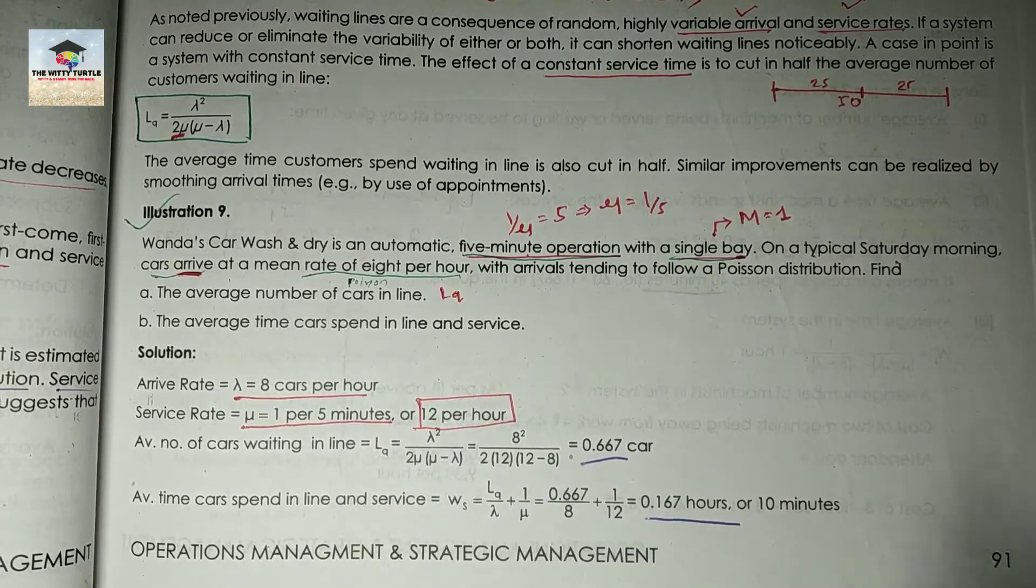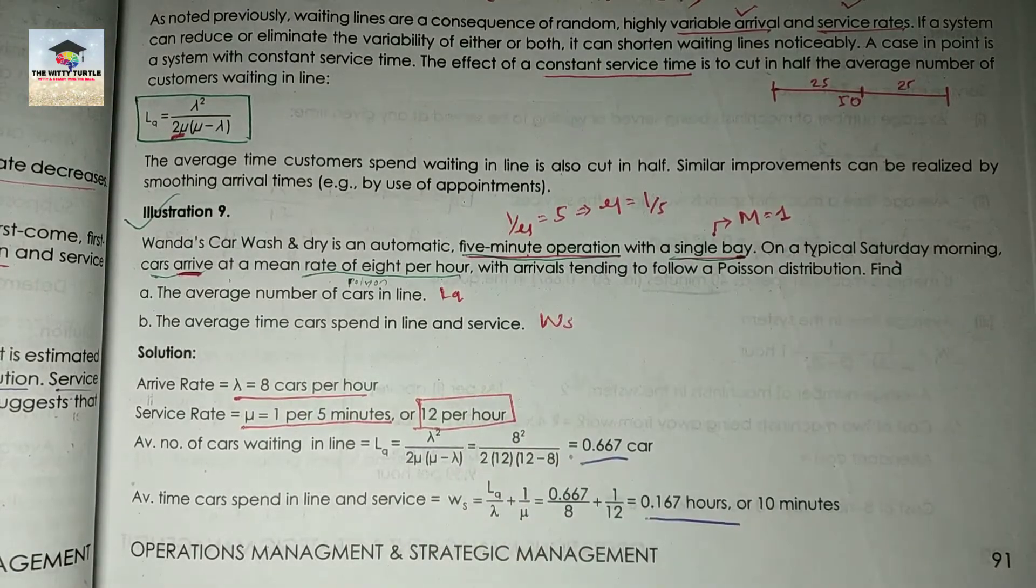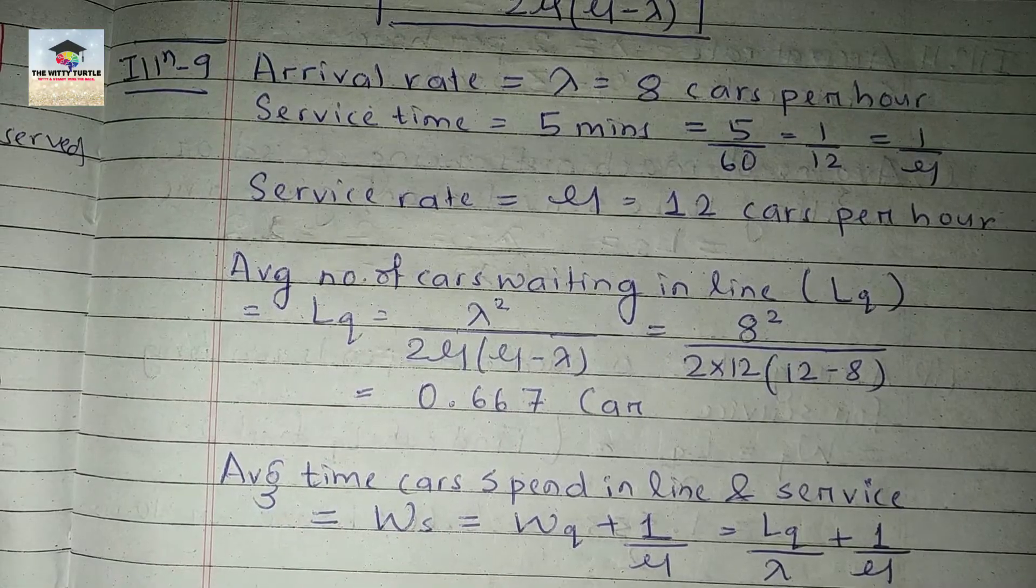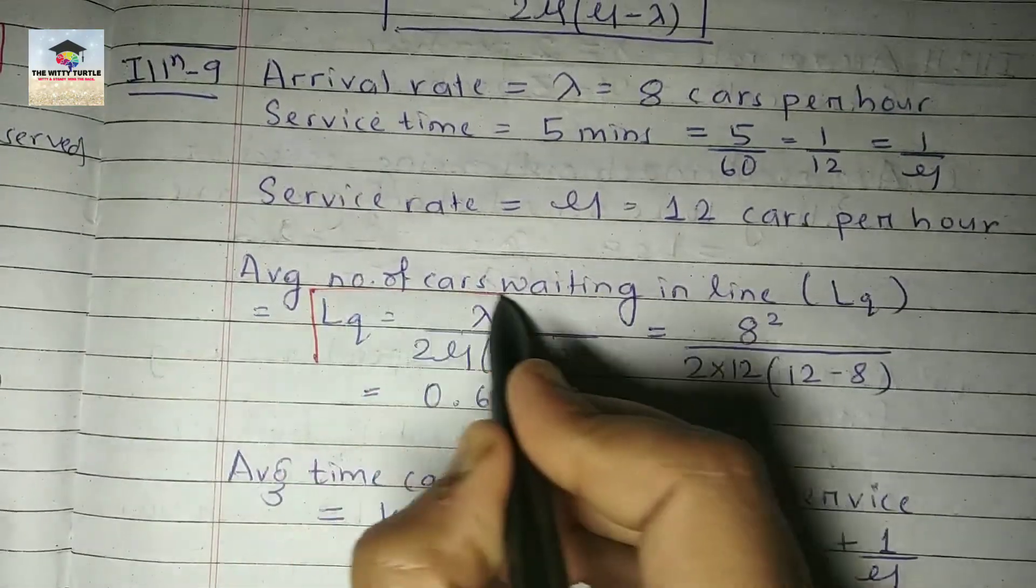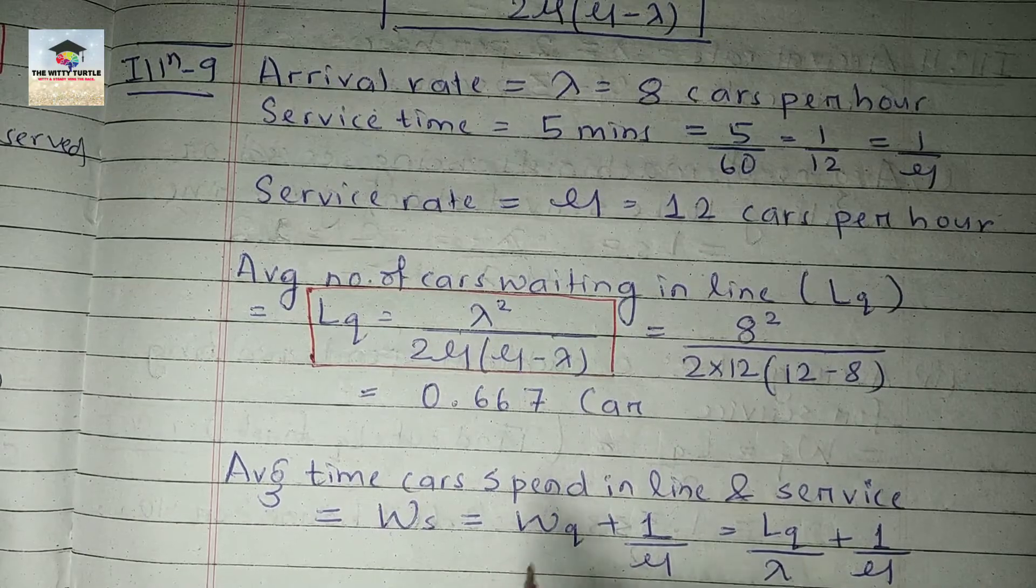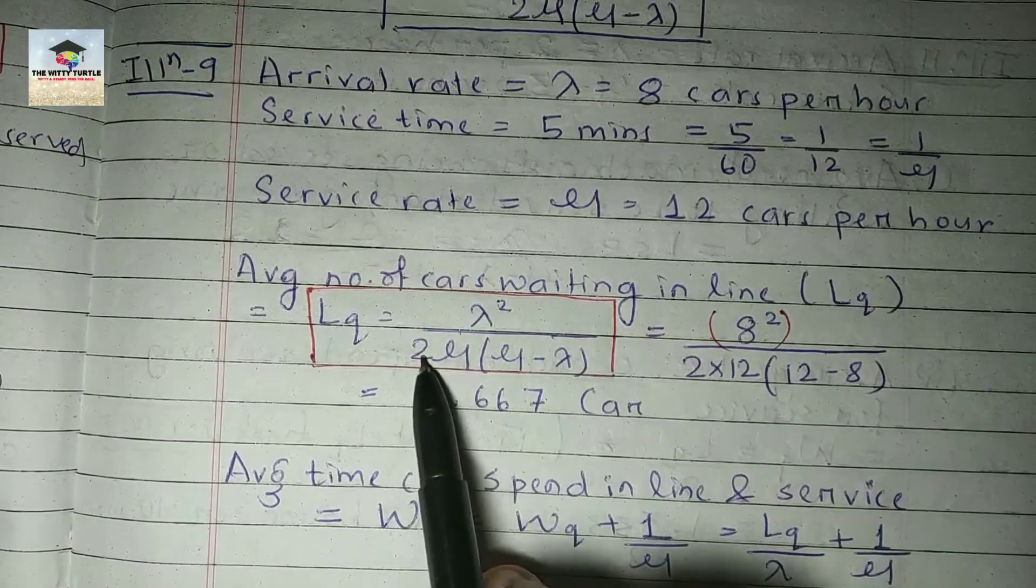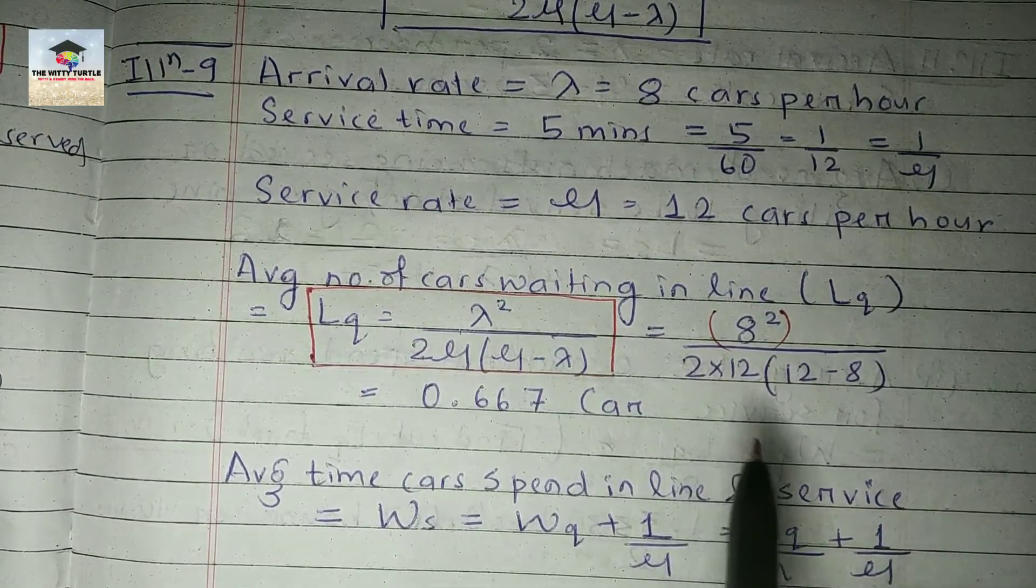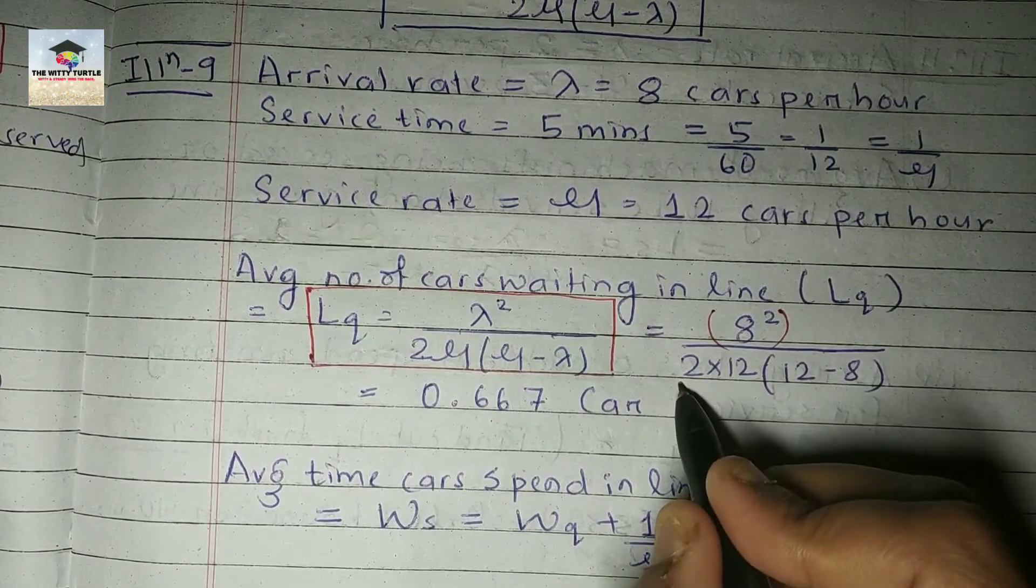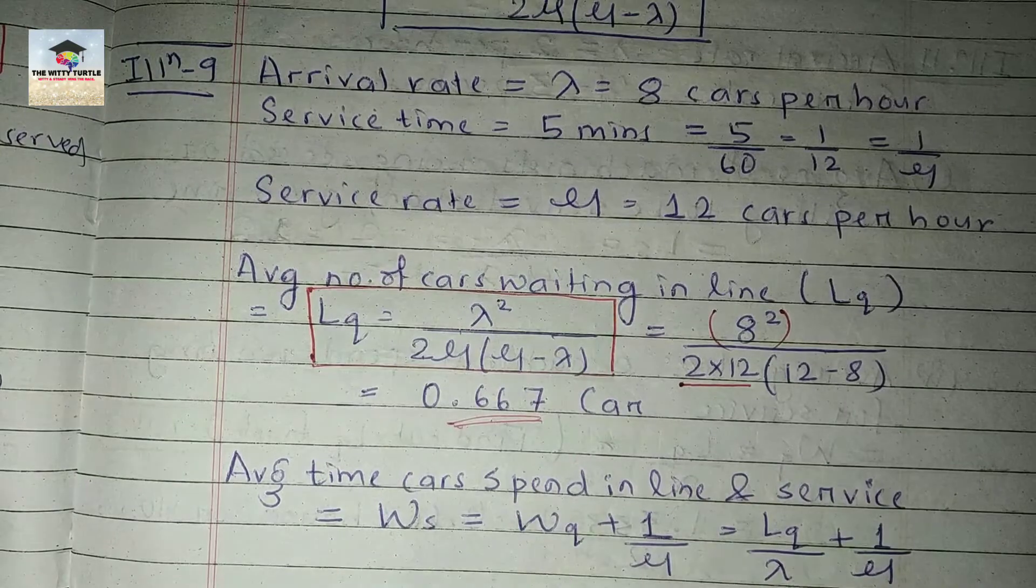Let's start with the solution. We already know the formula for Lq, that is lambda squared divided by 2 mu into mu minus lambda. So we know the value of lambda that is 8, so it will be 8 squared, then we have 2 into mu—the value of mu is 12 cars per hour, you have to convert them into hour. So this is 2 into 12 multiplied with 12 minus 8. So you can get the answer that is 0.667 cars.